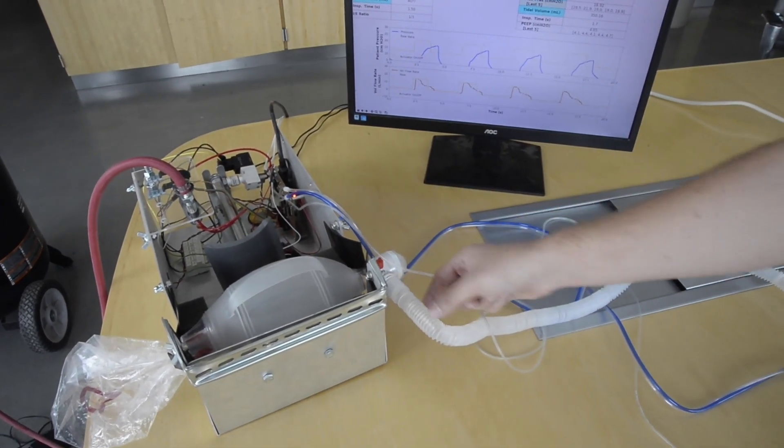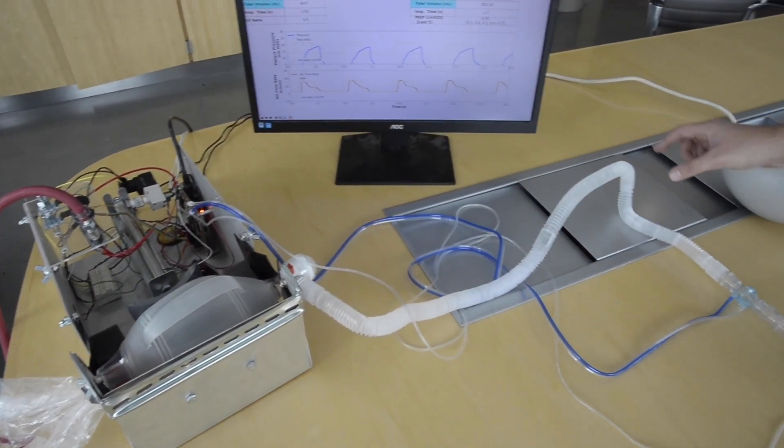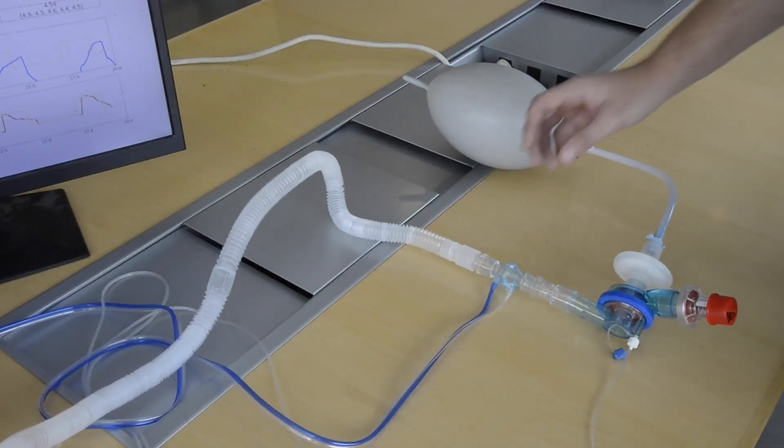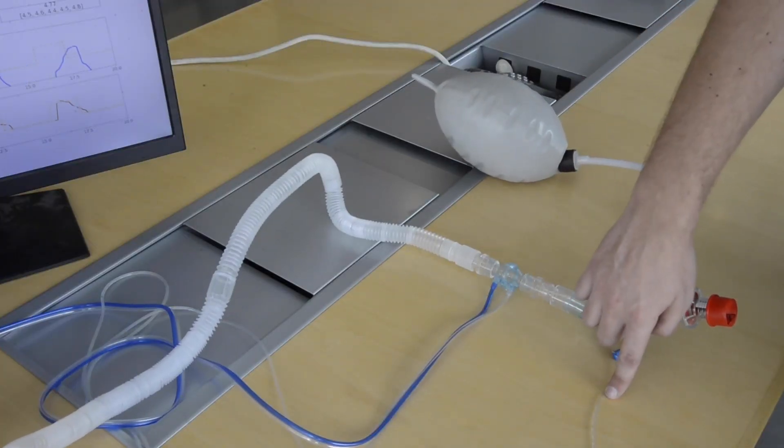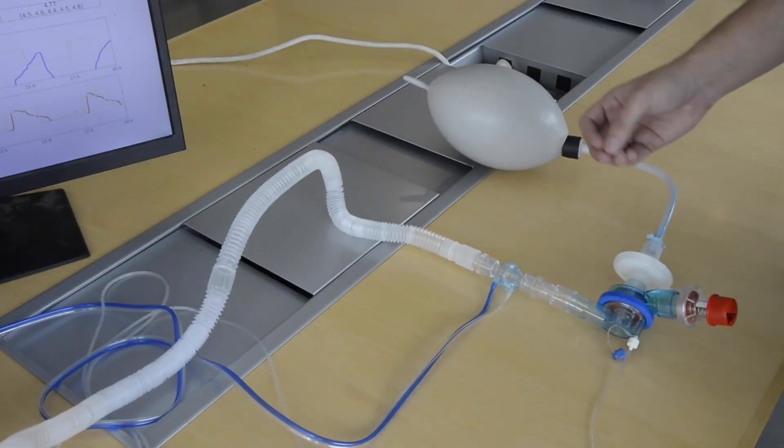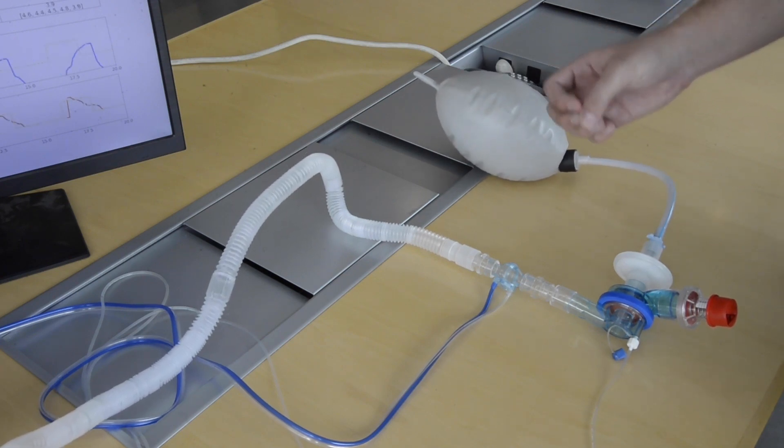Coming out of the ambu bag is a patient circuit flexible hose. On the patient side are a flow sensor and pressure sensor to continuously monitor patient vitals and update the Raspberry Pi.